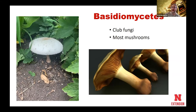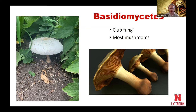The final group — the one that probably gets the most attention aside from the pathogens — are our basidiomycetes. Most of our mushrooms are basidiomycetes, not all of them, but most. These tend to be club fungi. As we think about how their spores are produced, they're produced more in a club-like structure as opposed to the sac that we have with ascomycetes.